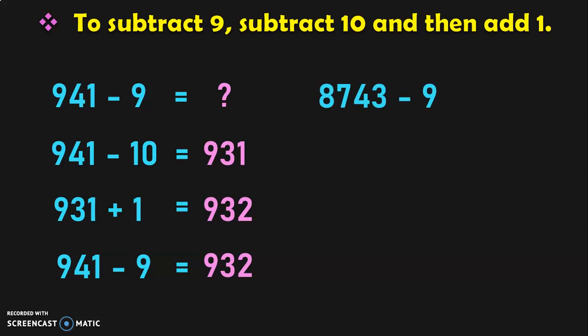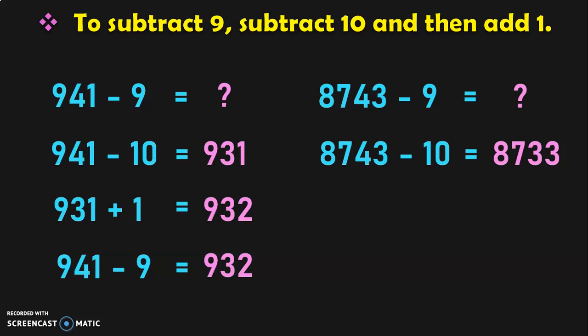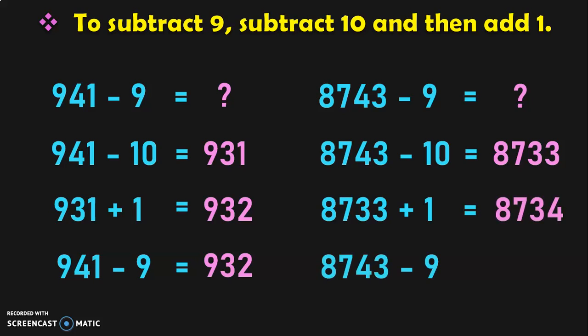Let us do for a 4-digit number. 8,743 minus 9 is equal to what? First, 8,743 minus 10 will give you 8,733. Next, 8,733 plus 1 will give you 8,734. So, the answer for 8,743 minus 9 is equal to 8,734. See how we have avoided the regrouping and borrowing concept with the help of mental math.